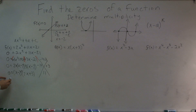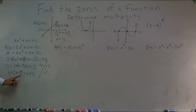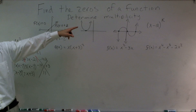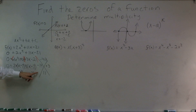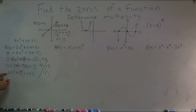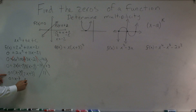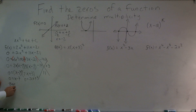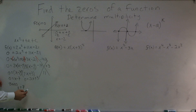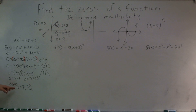So these are my two factors. Do they have any number raised to the second power? No. So these are both going to be odd multiplicities. To finish solving them, I set them both equal to 0: 0 equals x minus 7, and 0 equals 2x plus 3. Therefore, my zeros are x equals 7 and x equals negative 3 halves.